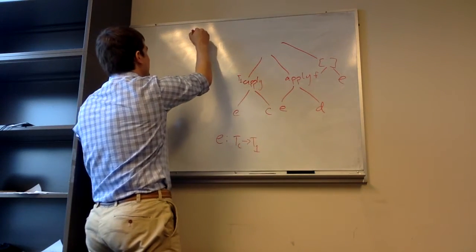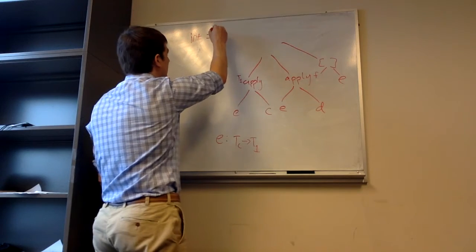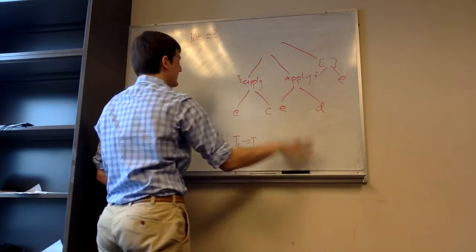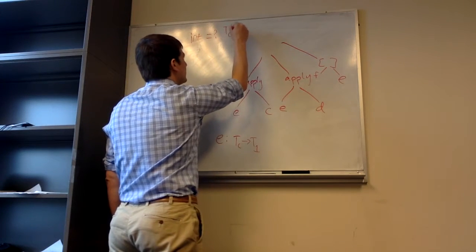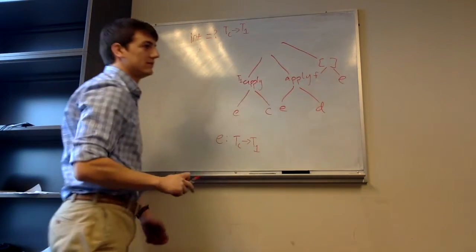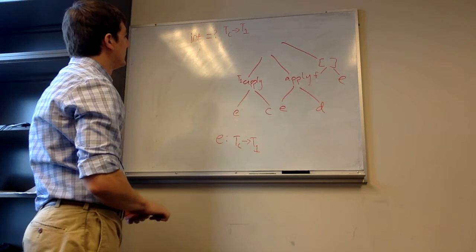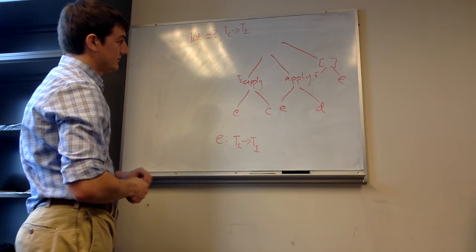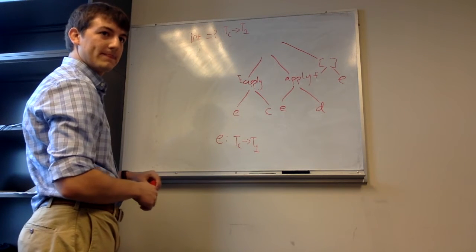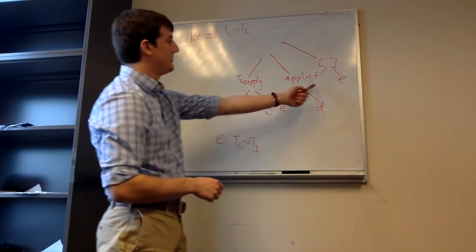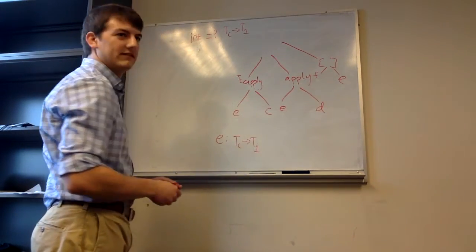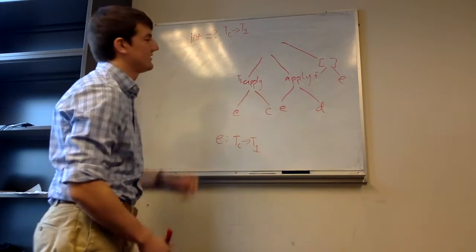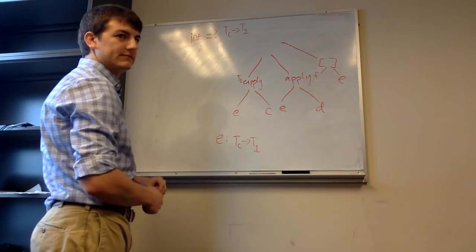So the question is: is an integer a function that takes in the type TC and returns a type T1? It just means T1 has to be in here as well. But would that work? If E was a function that returns an integer — if E was a function that takes in a type TC and returns a type T1 — well, T1 should be a function.